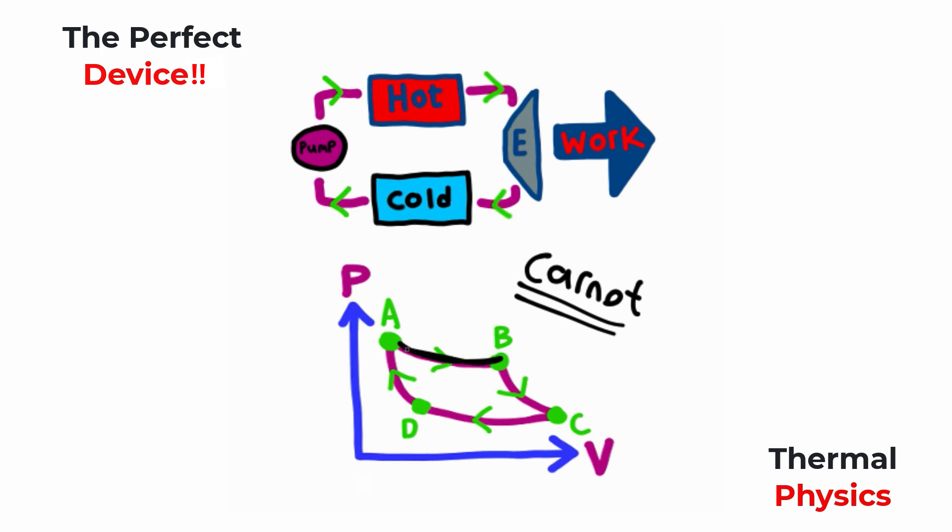We have what's called an isothermal expansion from A to B. This is where heat is transferred into the system, and the temperature stays constant. But as you can see, since the volume gets bigger, we have an expansion.